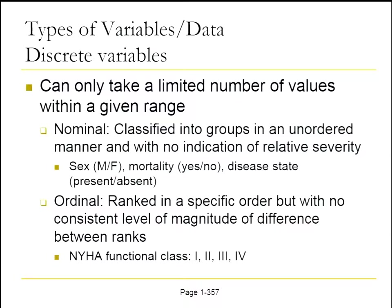Ordinal extends this a little bit more — now we're speaking of ranking variables in a specific order, but with no consistent magnitude between the ranks. The New York Heart Association functional classification for heart failure is an example of a commonly used ordinal type of data. Individuals are ranked via symptomatology: one being no symptoms, four being severe symptoms. The magnitude of difference between one and two is not necessarily the same as between two and three.